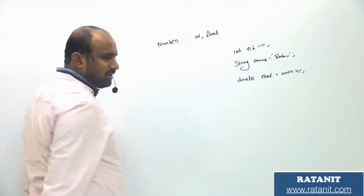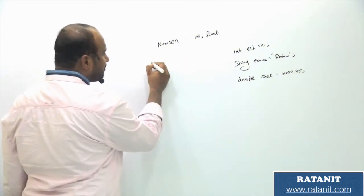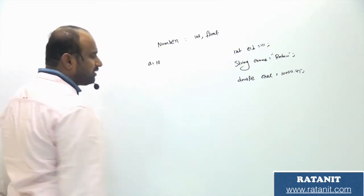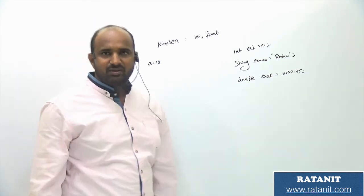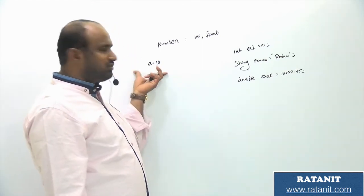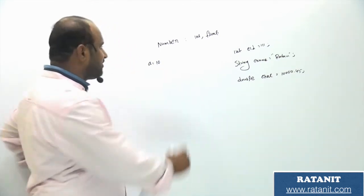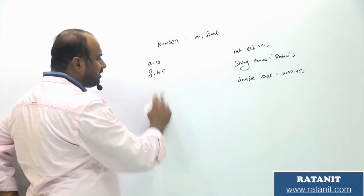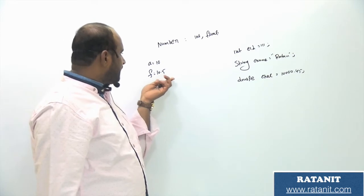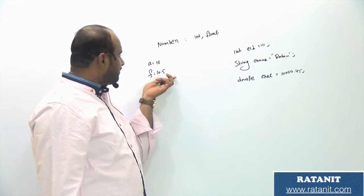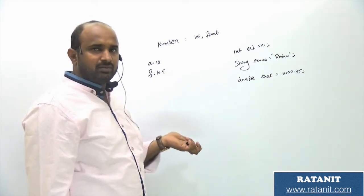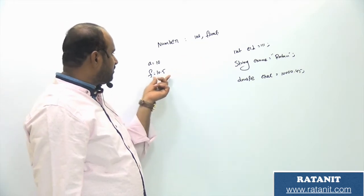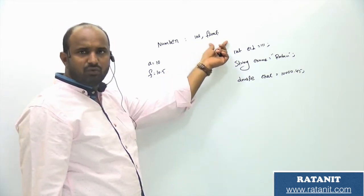Python is a dynamically typed language. Dynamically typed means no need to specify the type. For example, a = 10 — 'a' is by default integer type. If you write f = 10.5, those are decimal values and are by default float type. So numeric values are by default integer, decimal values are by default float.